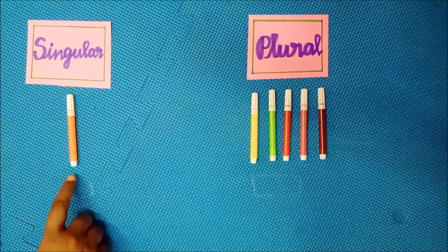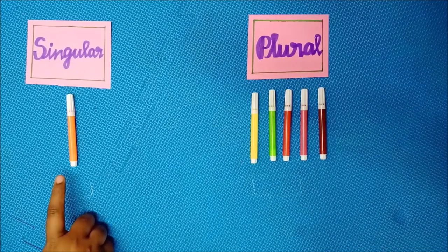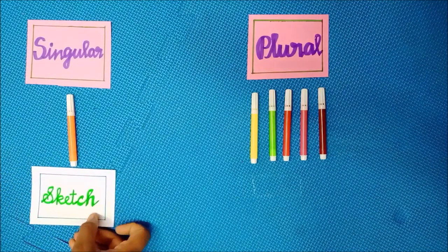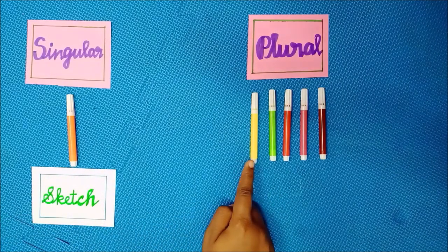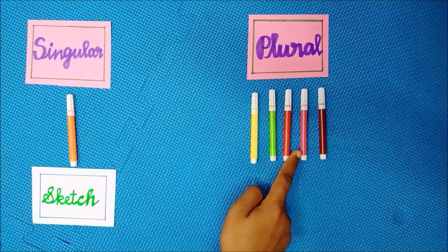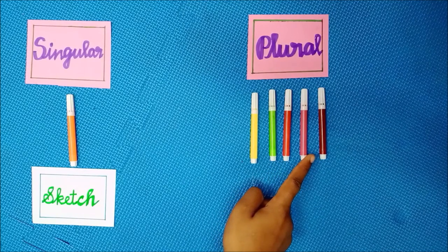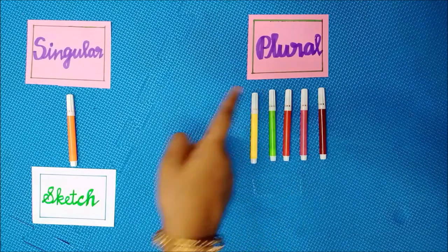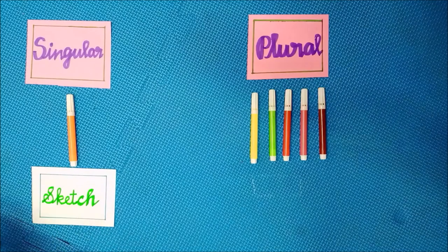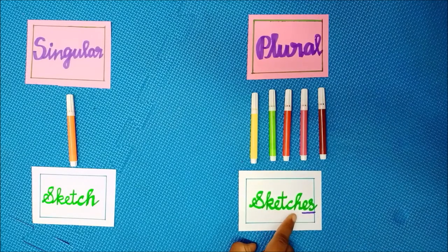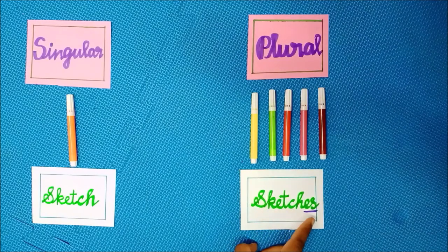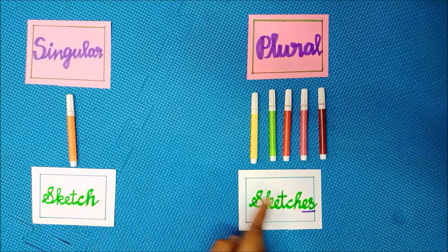Next, it is a sketch — only one sketch, so it is singular. Count: one, two, three, four, five — five sketches, so it is plural. The plural form of sketch is sketches, S-K-E-T-C-H-E-S — we add ES because sketch ends in CH.